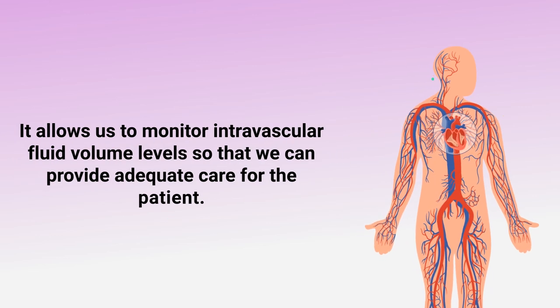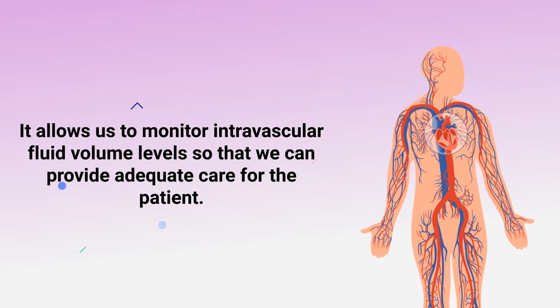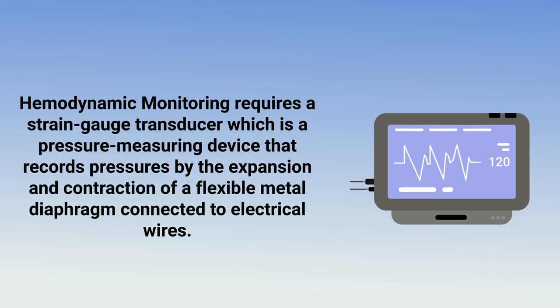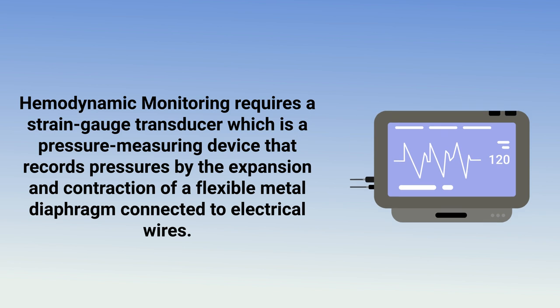It allows us to monitor intravascular fluid levels so that we can provide adequate care for the patient. Hemodynamic monitoring requires a strain gauge transducer, which is a pressure measuring device that records pressures by the expansion and contraction of a flexible metal diaphragm connected to electrical wires.